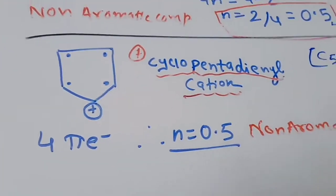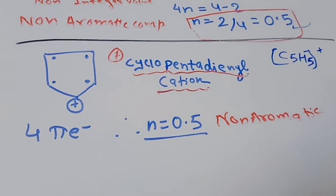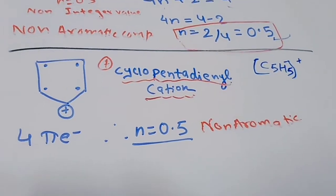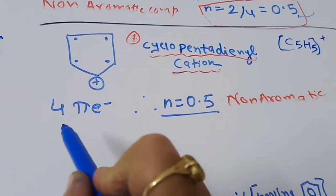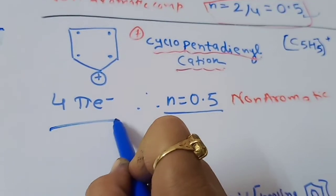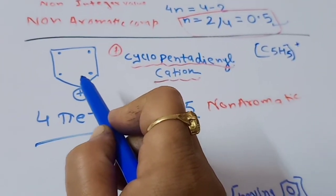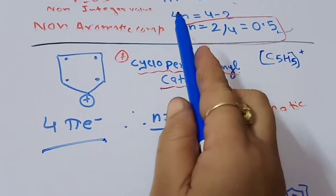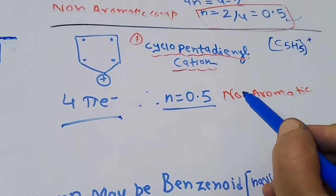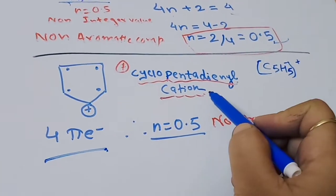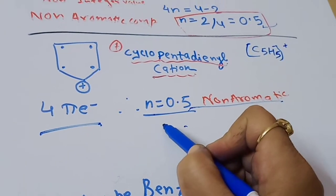The next example is the cyclopentadienyl cation, C5H5 with a positive charge. Here one electron is donated out, making it a 4 pi electron system. We already solved for 4 pi electrons: n = 0.5, a non-integer value. So the cyclopentadienyl cation is a non-aromatic compound and does not obey Huckel's rule.